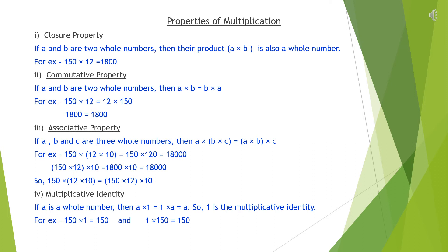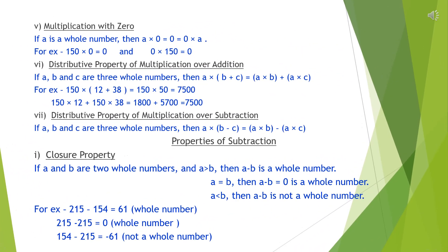Fourth, multiplicative identity. If a is a whole number, then a multiplied by 1 equals 1 multiplied by a equals a. So 1 is the multiplicative identity. For example, 150 multiplied by 1 equals 150, and 1 multiplied by 150 equals 150. Fifth property, multiplication by zero. If a is a whole number, then a multiplied by 0 equals 0, which equals 0 multiplied by a. That means if we multiply any number by 0, we get 0. For example, 150 multiplied by 0 equals 0, and 0 multiplied by 150 equals 0.